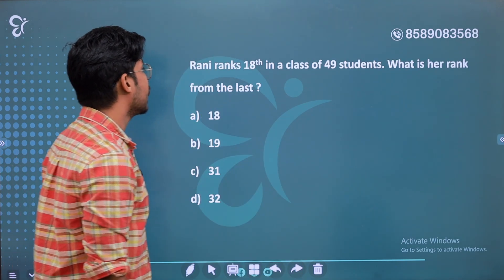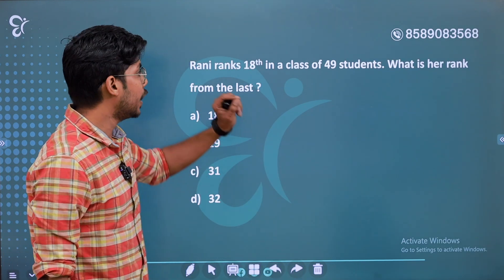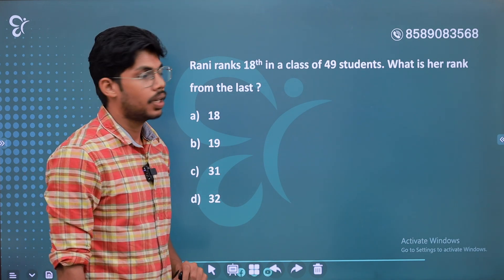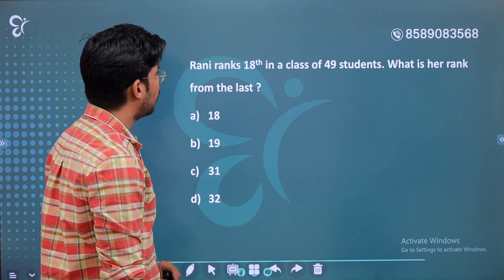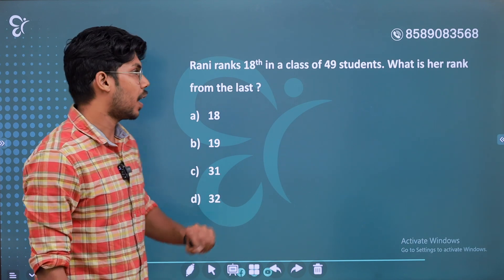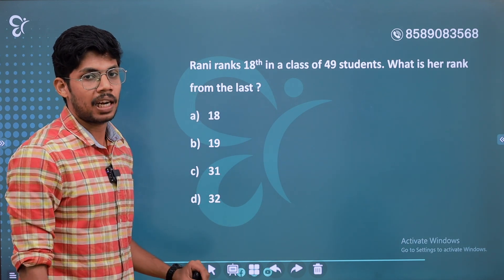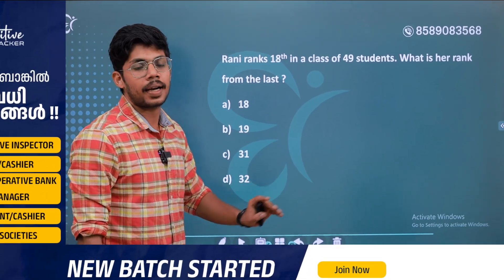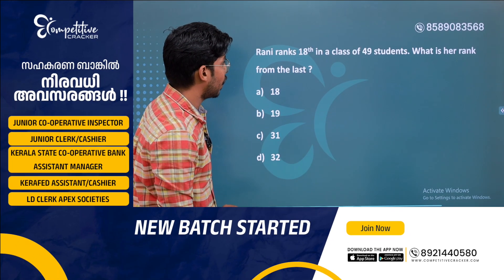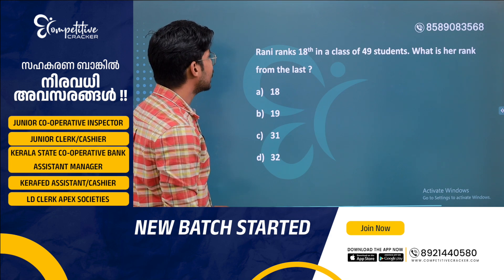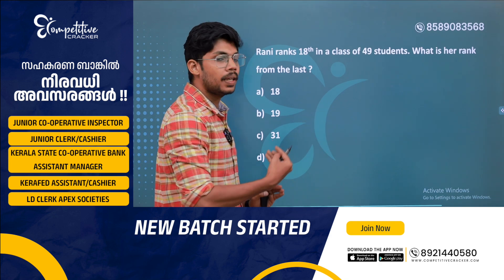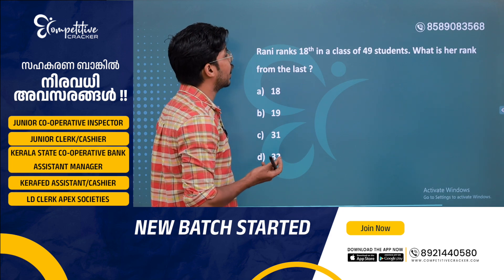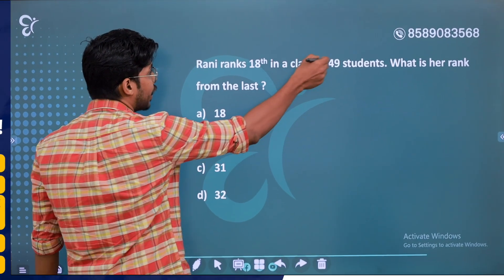The next question: In a class of 49 students, a student's rank from the top is 18. What is her rank from the last? Total students are 49.